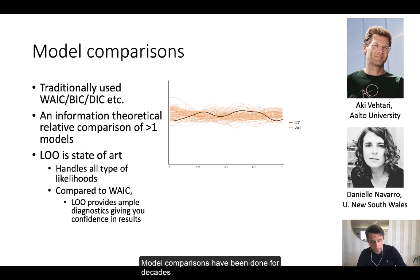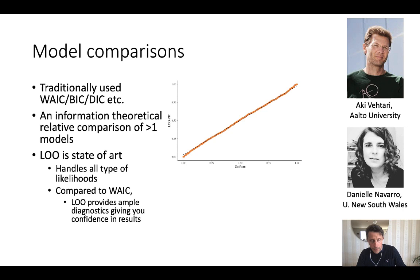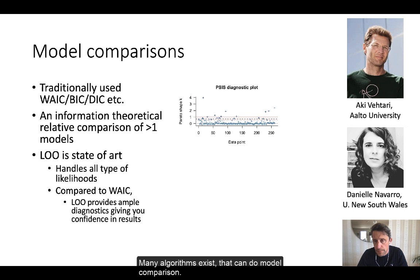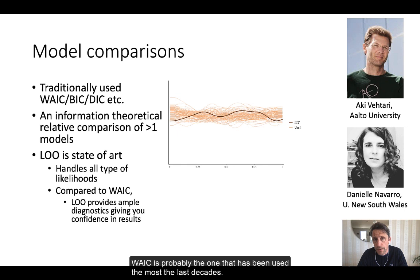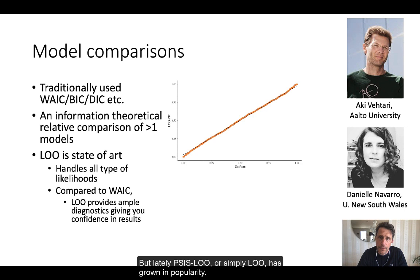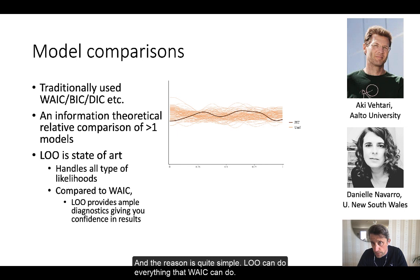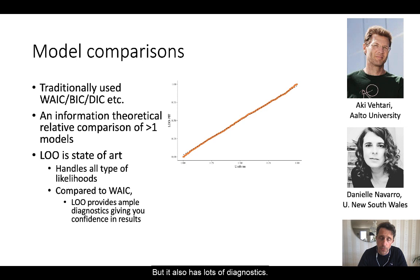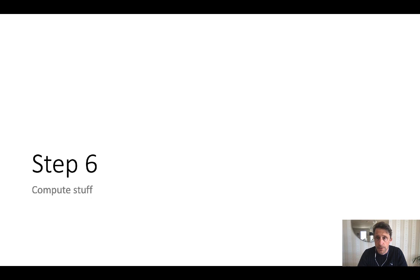Model comparisons have been done for decades. Many algorithms exist that can do model comparison. WAIC is probably the one that has been used the most the last decades. But lately, PSIS-LU or simply LUE has grown in popularity. And the reason is quite simple. LUE can do everything that WAIC can do, but it also has lots of diagnostics.